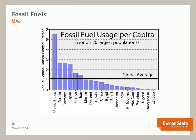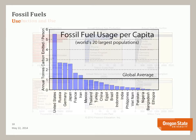Here's a chart showing our consumption compared to other countries — fossil fuel usage per capita for the 20 largest populations. Notice that the United States uses a lot of fossil fuels per person, almost more than twice what other countries use. We are a big consumer and therefore a big producer of the byproducts of burning fossil fuels. There's a lot of talk about China and India being big contributors to greenhouse gases, but on average they use a lot less energy per person.